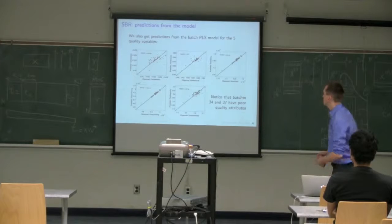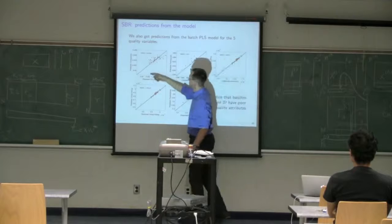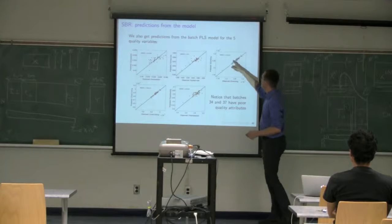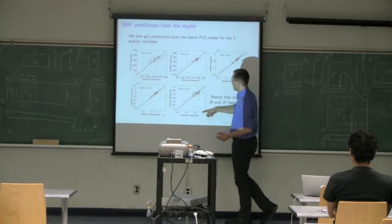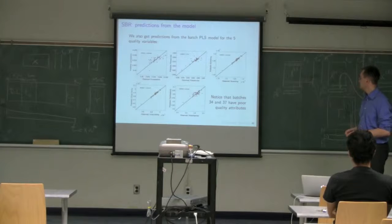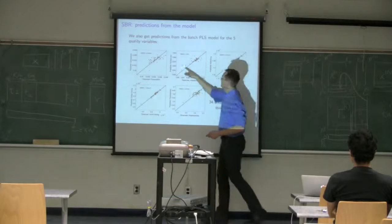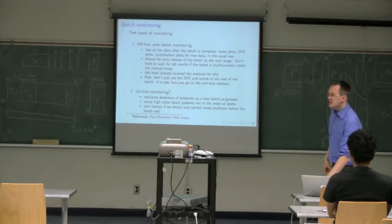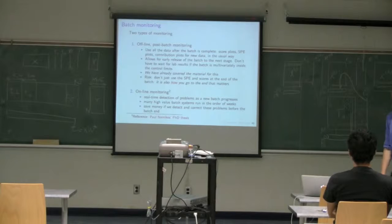Batch PLS is an ordinary PLS, so we also get predictions for each of the five Y variables at the end of the batch — some are better predicted than others. Batches 34 and 37 are slightly away from the rest of the data because their final quality was a bit off. Now, what I'd like to look at is how we can monitor those batches in real time. Is there a way to detect those problems right as they're occurring? In batch 37's case, why wait until the end if we could have picked it up when the problem started?